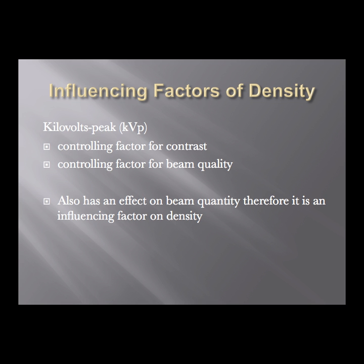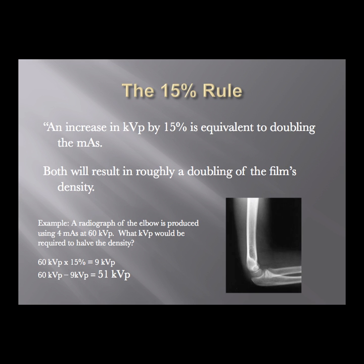We've talked so far about one influencing factor of density, which is one of the more important ones: kilovolts peak, or KVP. KVP is the controlling factor for contrast and also for beam quality, but it does have an effect on beam quantity — that's why we say it has an influencing effect on density. The influencing factor is pretty dramatic.